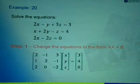So as usual, the first step is to change the three equations into matrix form AX equals B. We will take out the multiple of X first which is 2, 1 and 2. So we write down 2, 1, 2.